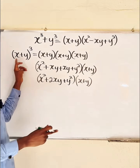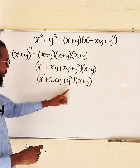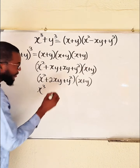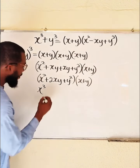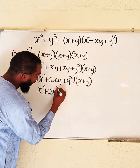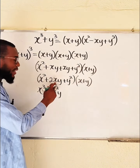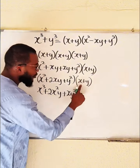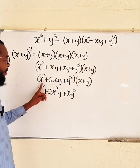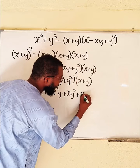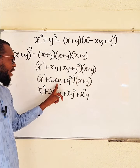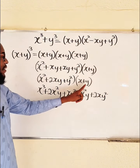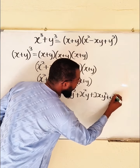The whole of this should be multiplied by x plus y. Remember, we are still expanding x plus y to the third power. So we are going to distribute again. Let's take x multiplied by x squared — that will give us x cubed. x multiplied by 2xy will give us 2x squared y, because the x and the x will multiply. Then x times y squared will give us xy squared. We are done with x. Then y times x squared will give us x squared y. y times 2xy will give us 2xy squared. And lastly, y times y squared will give us y cubed.